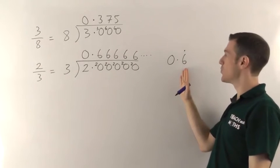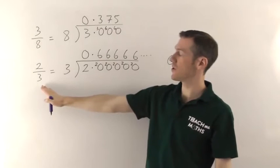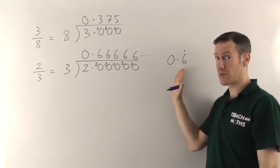So that means 0.6 recurring i.e. 0.66666 where the 6s go on forever. So 2/3 as a decimal is 0.6 recurring.